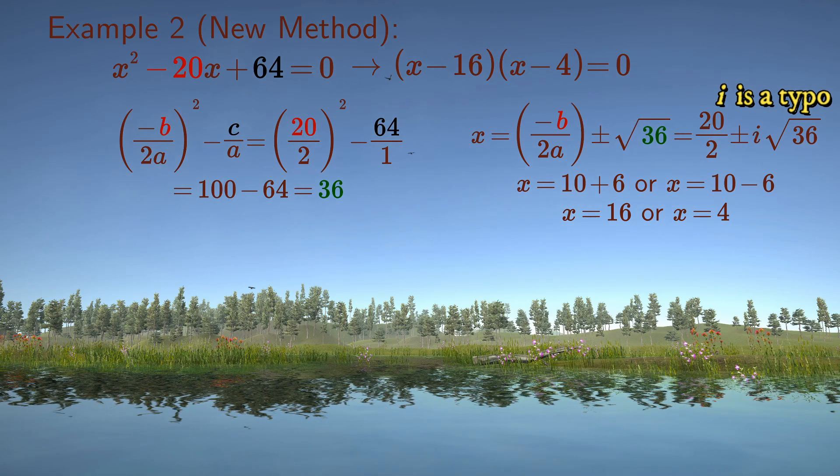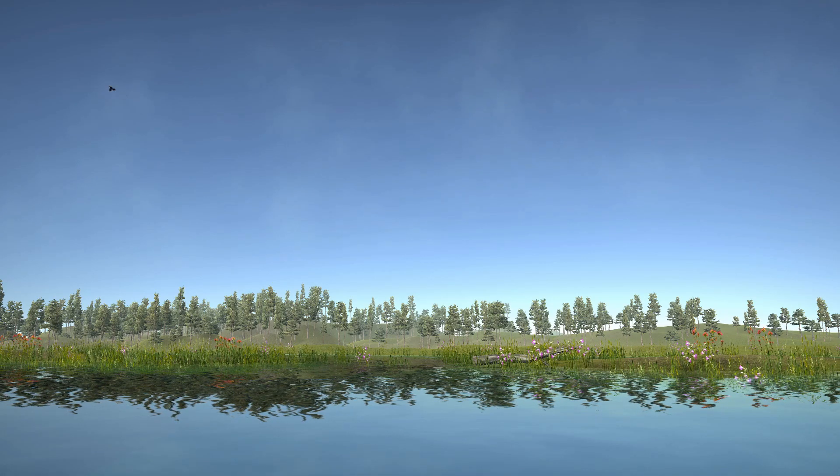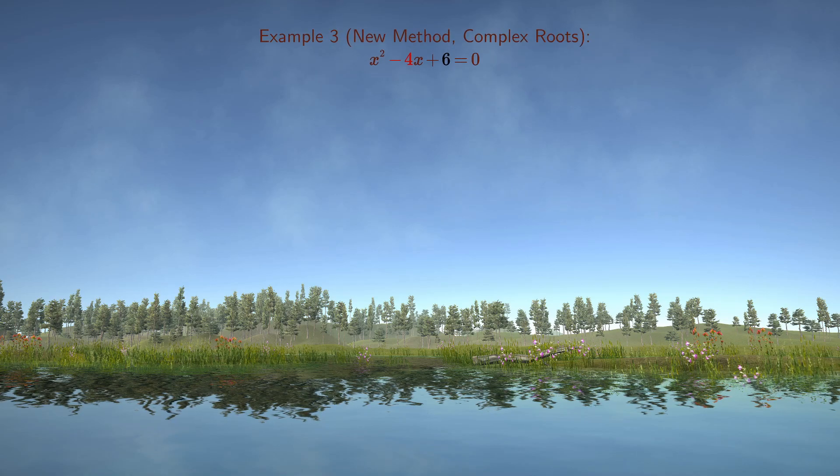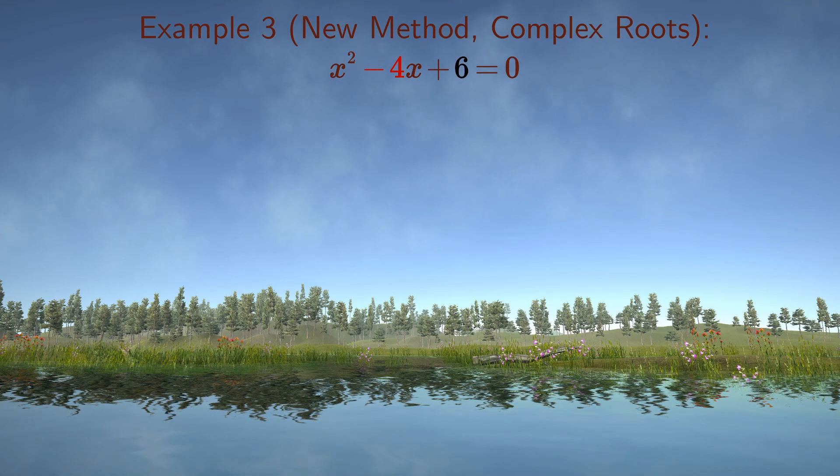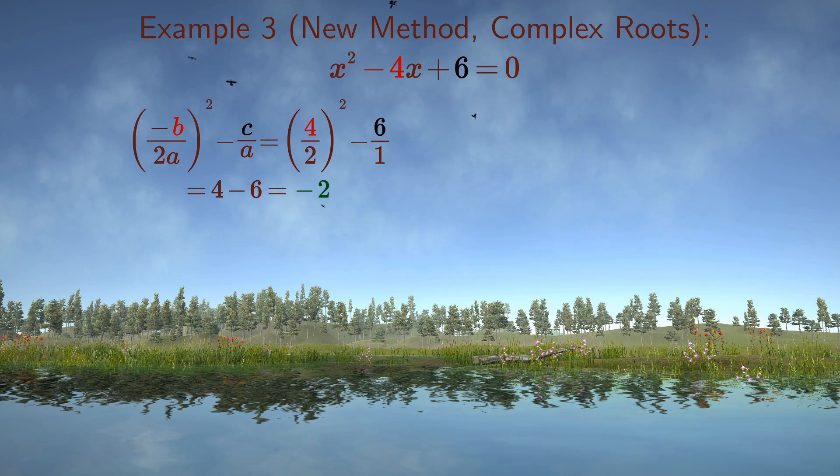But look what happens when the quadratic equation becomes more complex. If you tried to solve x squared minus 4x plus 6 equals 0, you won't find integer factors of 6 that add up to 4. Neither 1 times 6 nor 2 times 3 works.